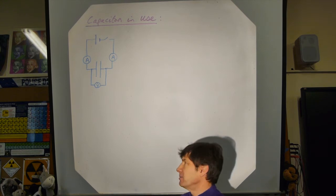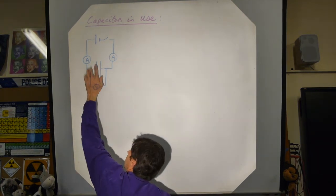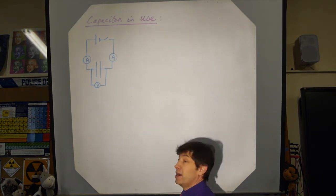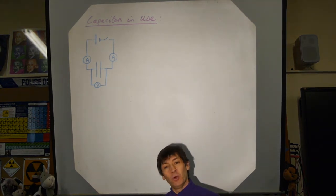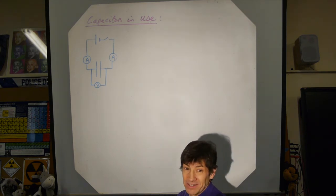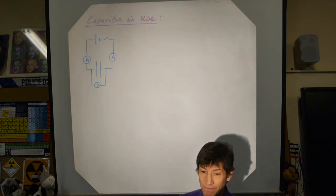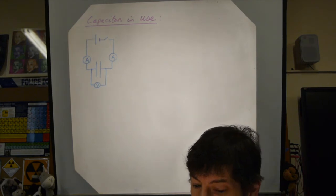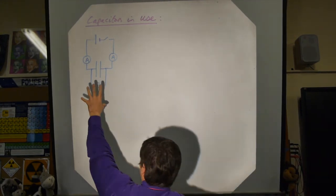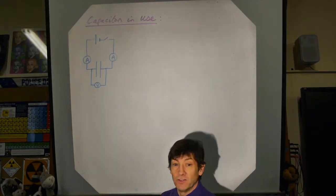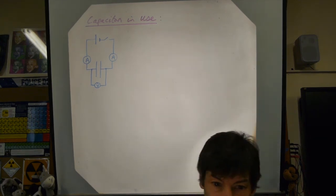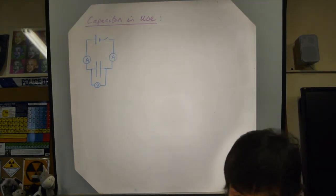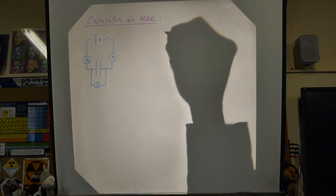There's a very weird bit of physics called the displacement current that explains why we do get a current in this circuit. I'm not going to deal with that — it's more a university topic — but from now on just follow what I'm doing, as it's standard A-level.